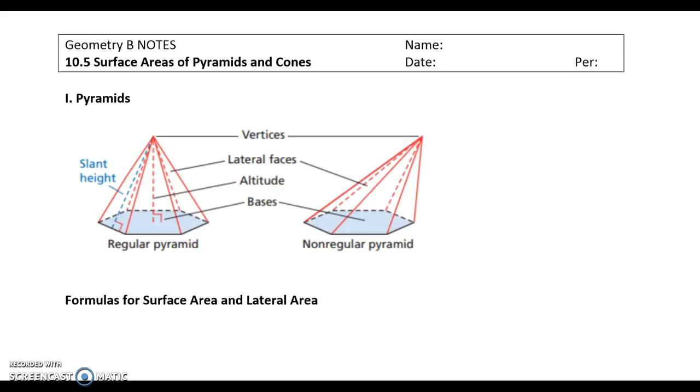The big thing you want to remember for pyramids and cones is we're going to talk about a different type of height, which is called slant height. The slant height is actually the height that goes from the vertex at the top down the side to the edge of the base. That is what we call slant height.